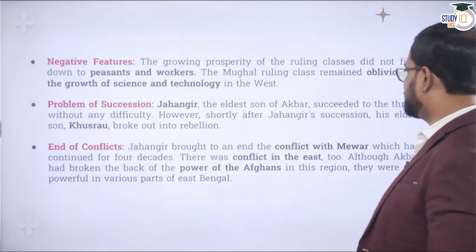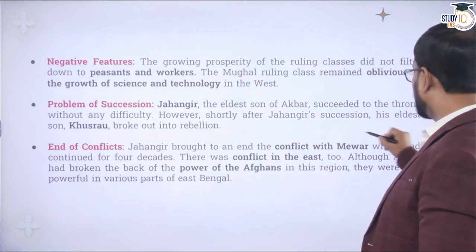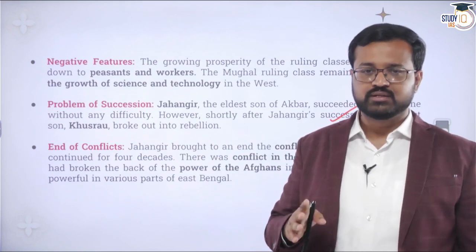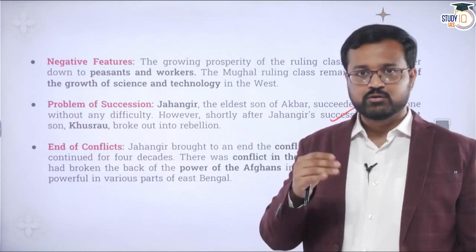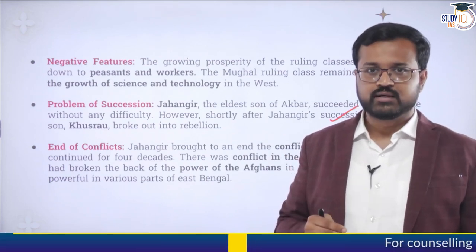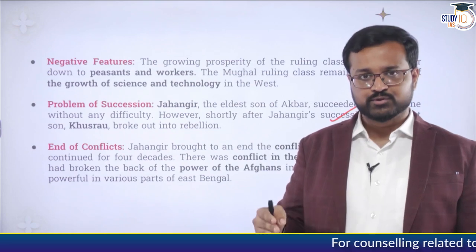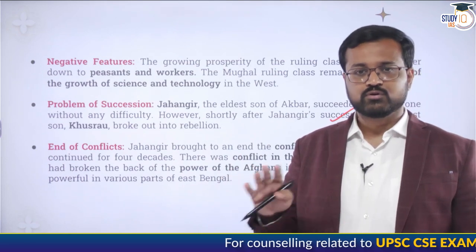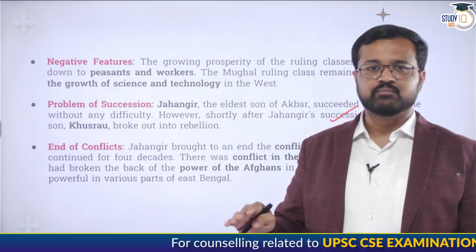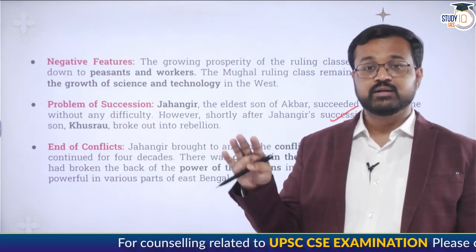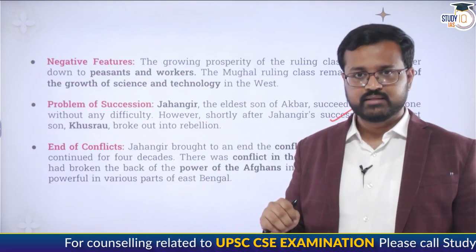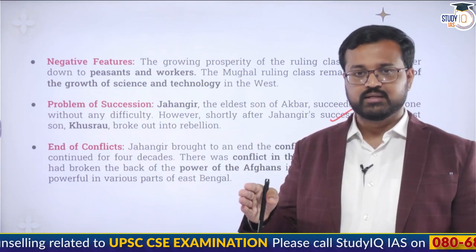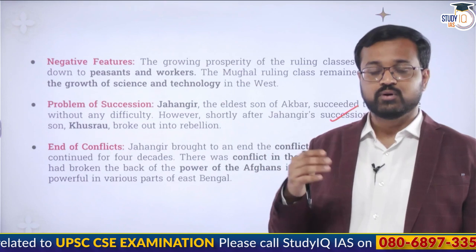The problem of succession was very huge for Mughals — son revolting against father for the throne set a terrible precedent. During Jahangir's time, his two sons Khusro and Khurram both revolted; Khurram later successfully became Shah Jahan. During Shah Jahan's time, Aurangzeb and Dara Shikoh had a civil war; Dara Shikoh was killed and Aurangzeb became emperor.